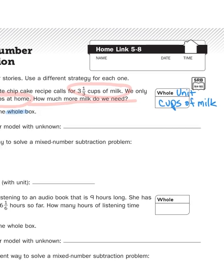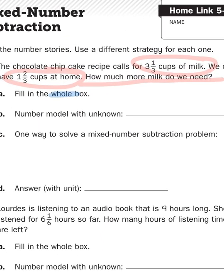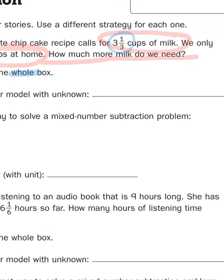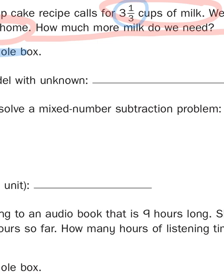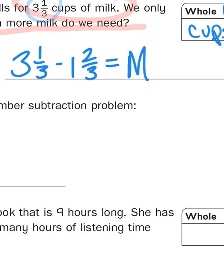So what is our number model? Well, we have three and a third cups, and we have one and two thirds cups. So my number model would look like this: three and a third minus one and two thirds equals M for milk. The letter M is just a placeholder until we find our answer.